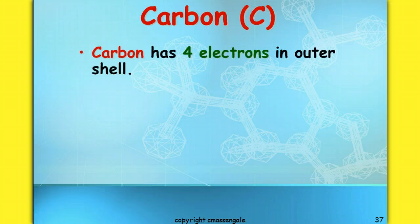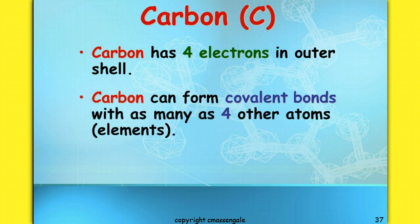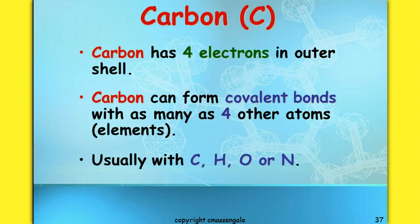Carbon is the major element that identifies organic compounds. Carbon itself has four electrons in its outer shell. When we studied that second energy level, we learned that there should be eight electrons to make that atom happy. So carbon is great for forming covalent bonds with as many as four other atoms or elements — usually carbon, hydrogen, oxygen, or nitrogen.